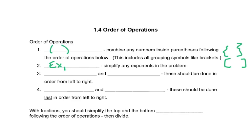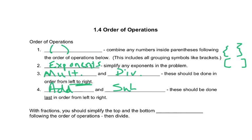The next step is to deal with exponents — simplify any exponents. Then we do multiplication and division in order from left to right. That's a common mistake: people want to do multiplication before division, but if division comes first left to right, we do division before multiplication. The last step is addition and subtraction, also left to right. With fractions, simplify the top and bottom separately following the order of operations, then divide.